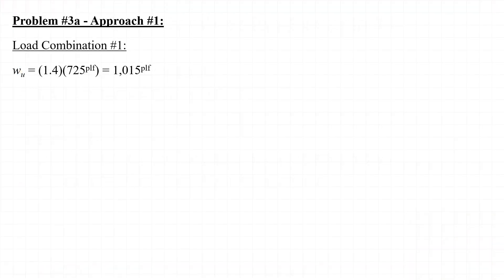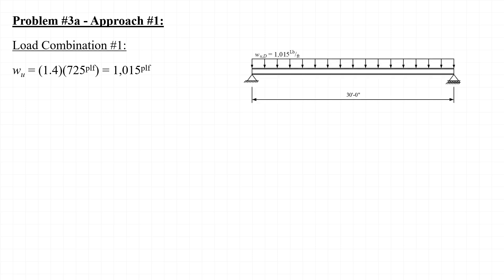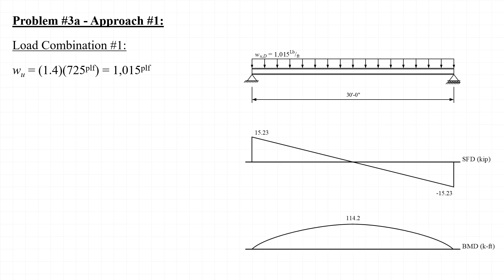Using approach number one, we'll start off by applying the load factors from load combination number one. Since load combination number one includes only dead load, the resulting factored loads applied to the beam consist only of a uniformly distributed load with a magnitude of 1015 pounds per linear foot. From this loading, we can sketch the shear force and bending moment diagrams. The maximum shear force occurs at each end of the beam with a magnitude of 15.2 kips, and the maximum bending moment occurs at mid-span with a magnitude of 114 kip-feet.